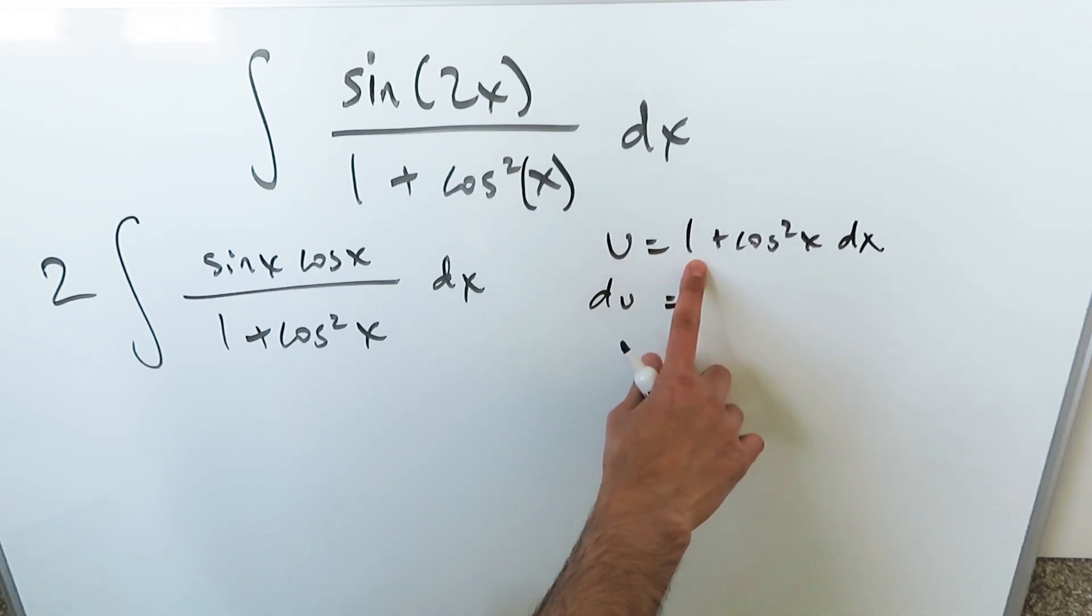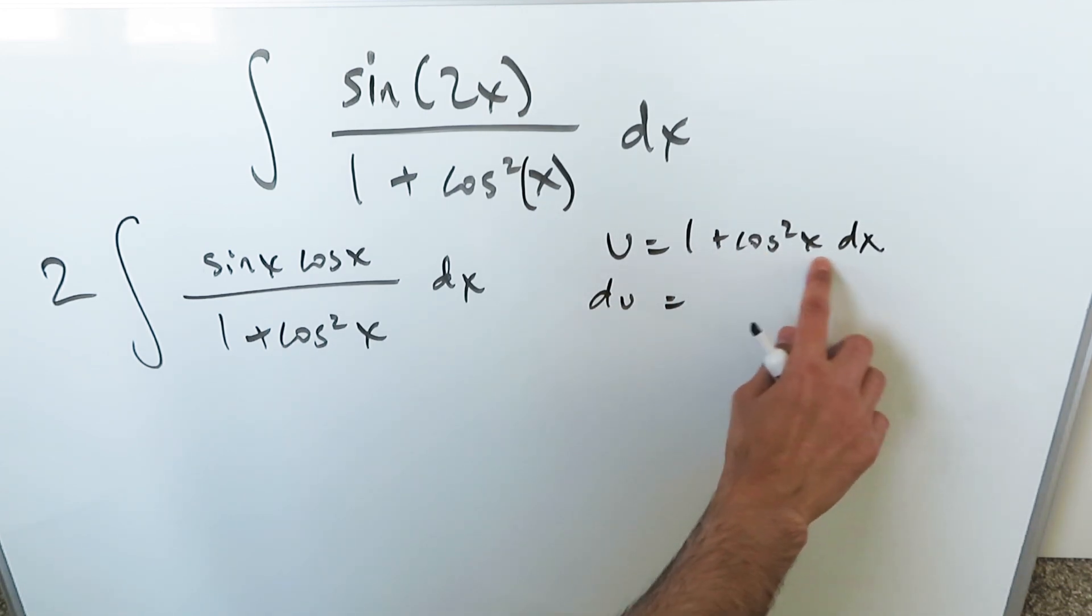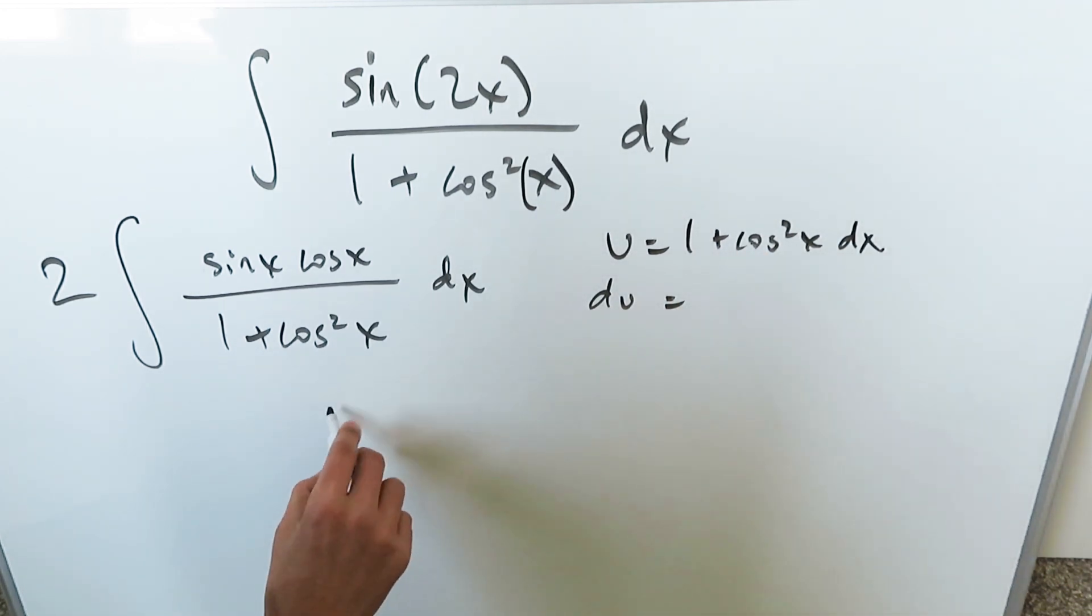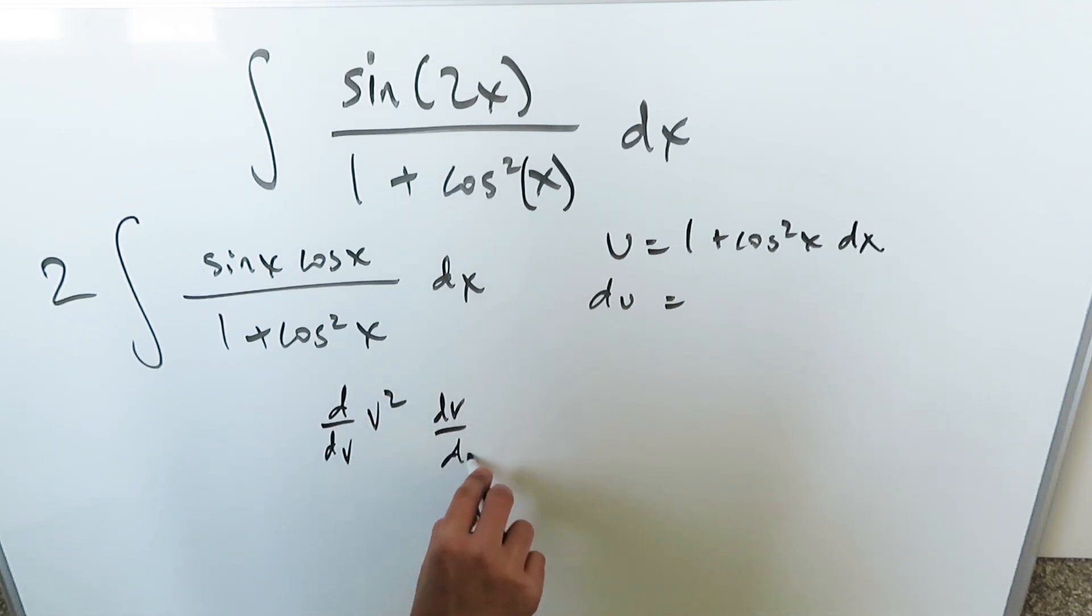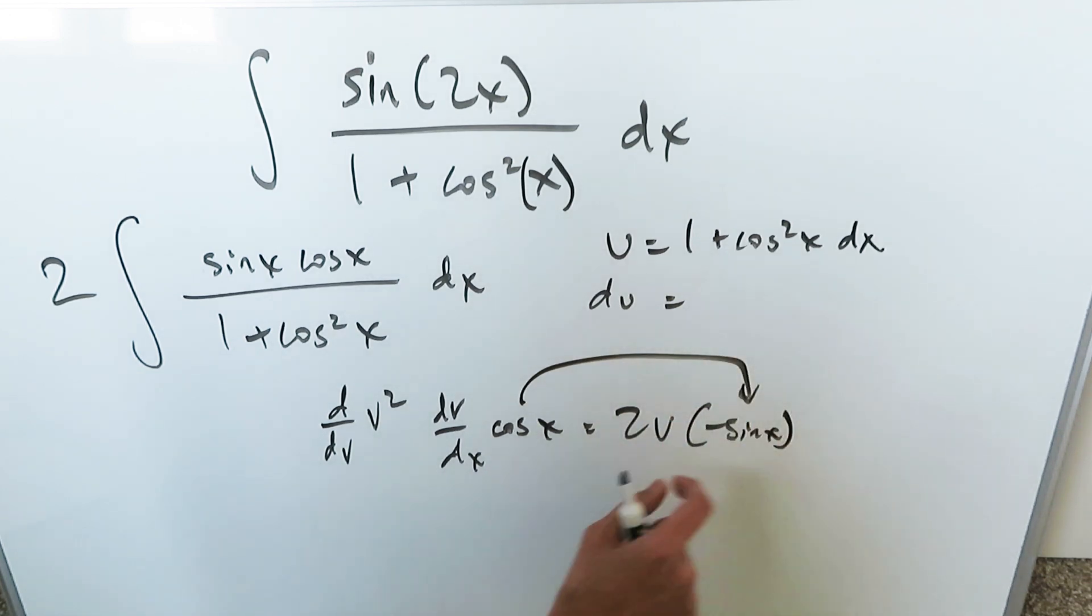The derivative of 1, a constant, is 0 but you can do the derivative of this. We can use a v variable. d over dv, v squared, and then dv over dx cosine x. What do we have here? We have a 2v and then a minus sine x because the derivative of cosine x is a minus sine x.